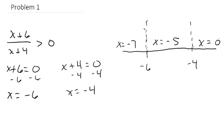When choosing a number from each region, it doesn't matter which specific number you choose. For example, instead of negative 7, we could have chosen negative 8, negative 9, or negative 10, as long as it's less than negative 6. Similarly, pick anything between negative 6 and negative 4 for the middle, and anything greater than negative 4 for the right region.